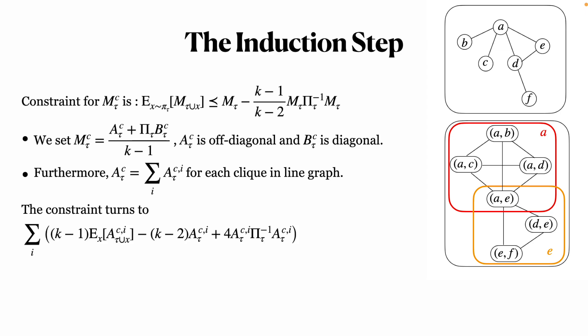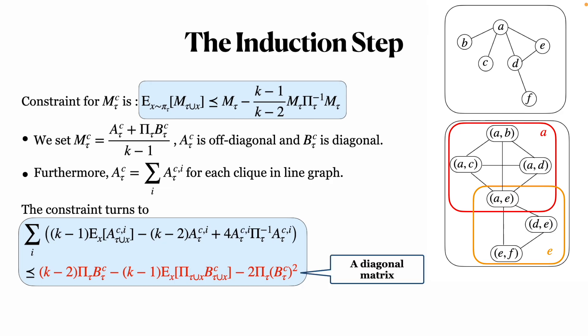Since the right-hand side as the red part is a diagonal matrix, our goal is to set appropriate A and upper bound the left-hand side to transform this system into a set of scalar inequalities.